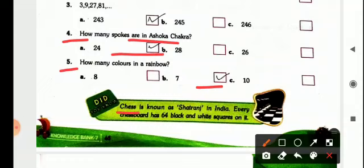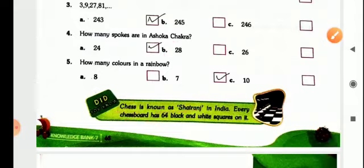Now here is some important information is given. Chess is also known as Kshatranj in India and every checkboard has 64 black and white squares on it.